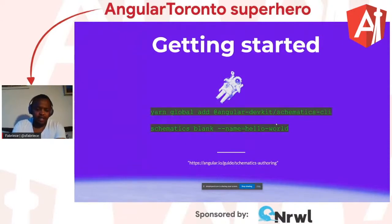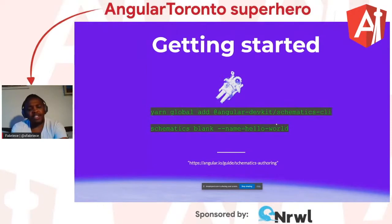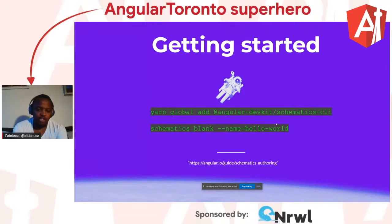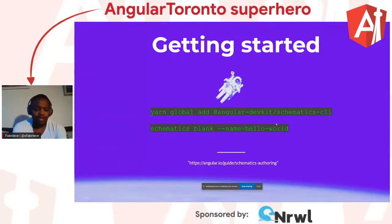How do you get started? Digging through the documentation, I found that schematics actually have a CLI which you can install globally, as shown on screen. Then you run `schematics blank` — blank is a template — and the name of the schematic you want. In this case, you are creating a blank schematic called Hello World.